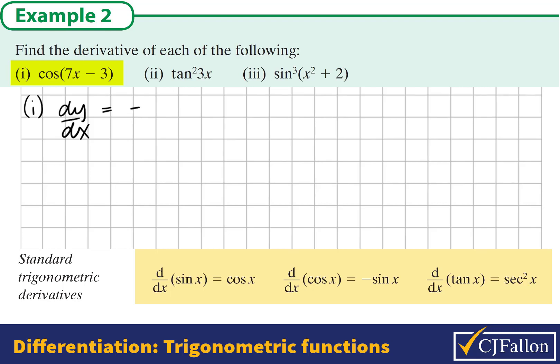The derivative of cosine is negative sine, so it's negative sine of the angle. The angle doesn't change, and then we multiply this by the derivative of the angle, the inside part, which becomes 7. That's the answer. We can write it as negative 7 sine times the angle.